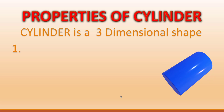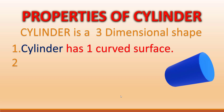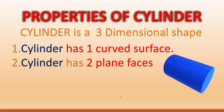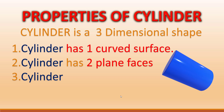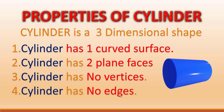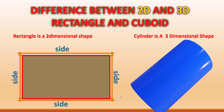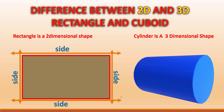Cylinder is a three-dimensional shape. The cylinder has one curved surface and two plain surfaces. It has no edges.